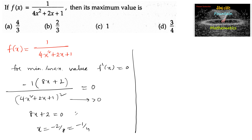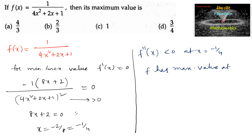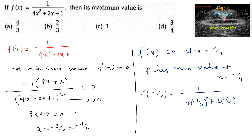At x equal to minus 1 by 4, the function will have either a minimum or maximum value. We can say that f″(x) is less than 0 at x equal to minus 1 by 4, which implies f has a maximum value there. So f(−1/4) equals 1 divided by 4 times (−1/4)² plus 2 times (−1/4) plus 1, which equals 1 upon 1/4 minus 1/2 plus 1, giving 1 upon 3/4.